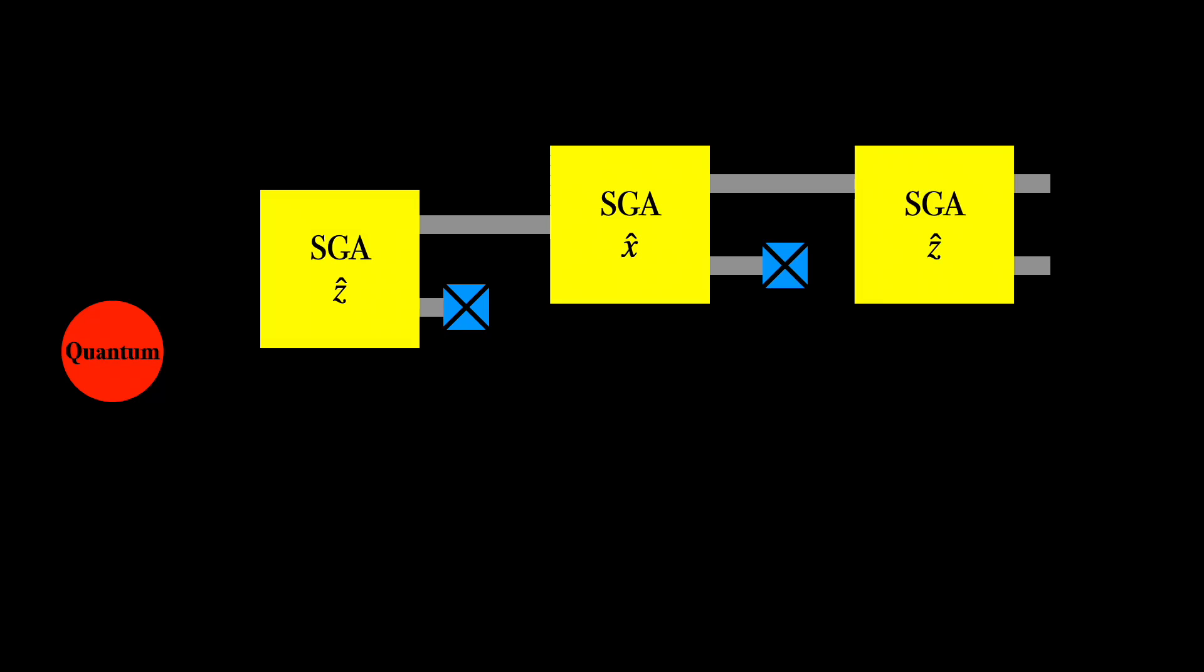So in the sequential Stern-Gerlach experiment, there are atoms that go into the first apparatus and interact with an inhomogeneous magnetic field oriented in the z direction. They come out 50% spin z up and 50% spin z down. The spin z down atoms are filtered out and only the spin z up atoms are taken and fed into the second apparatus. This apparatus now has an inhomogeneous magnetic field oriented in the x direction. The atoms then come out 50% x up and 50% x down.